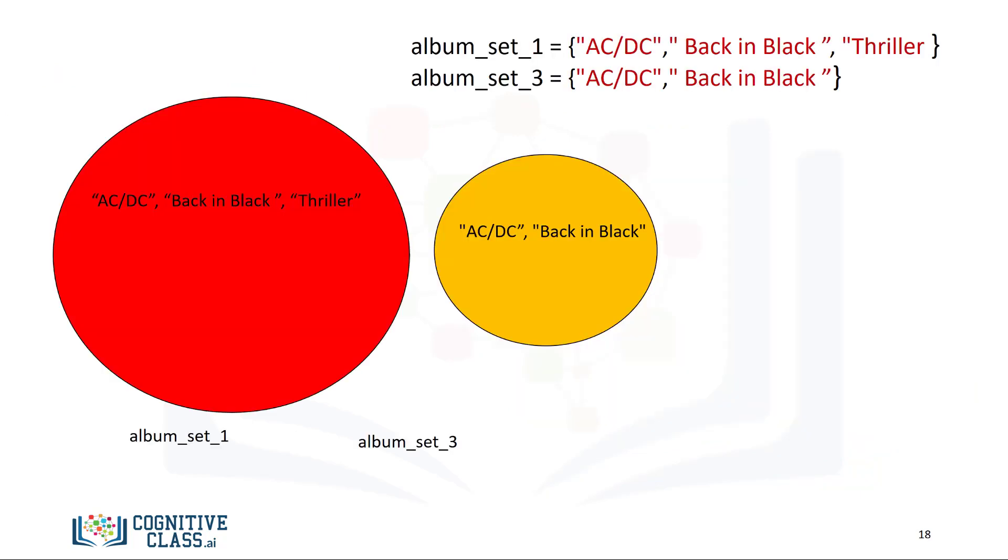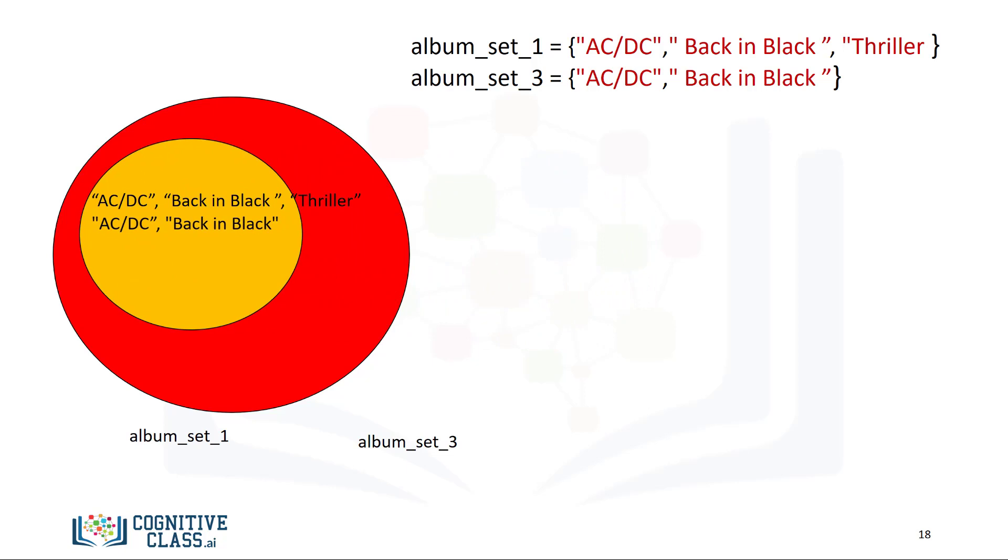Consider the new album set, album set 3. The set contains the elements ACDC and Back in Black. We can represent this with a Venn diagram. As all the elements in album set 3 are in album set 1, the circle representing album set 1 encapsulates the circle representing album set 3. We can check if a set is a subset using the isSubset method. As album set 3 is a subset of album set 1, the result is true.